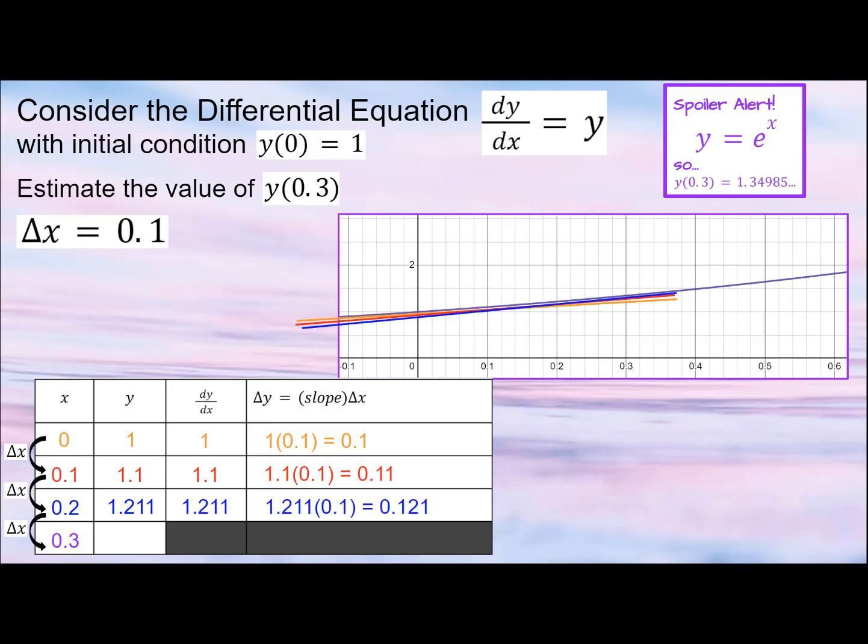This blue line is an even more accurate estimate of what y of 0.3 could be. Add delta y to the previous y. Our final estimation is 1.211 plus 0.121, which is 1.331, taking place very close to the actual value.